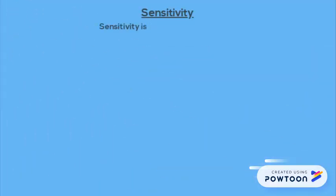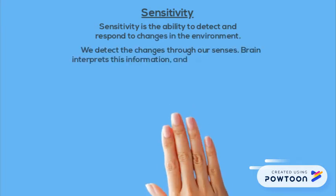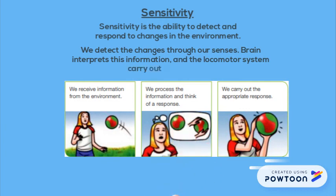Sensitivity is the ability to detect and respond to changes in the environment. We detect changes through our senses. The brain interprets this information and the locomotor system carries out the response. Here you can see a picture showing the process.